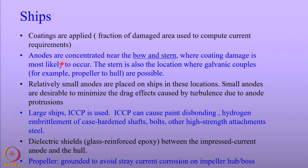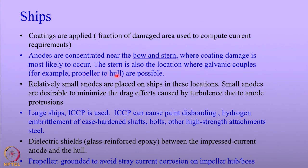The anodes are concentrated more on the bow and stern side where the coating is damaged. As the coating is damaged, the current requirement becomes greater, so anodes are concentrated at locations where the coating is likely to get damaged in service. The stern is also where galvanic couples between the propeller and the hull are possible. The propeller is made of a relatively noble metal compared to the hull, so the hull can suffer corrosion — more galvanic anodes are therefore located at these locations.